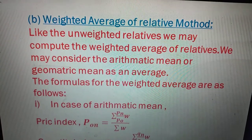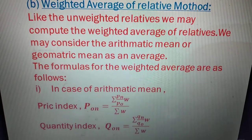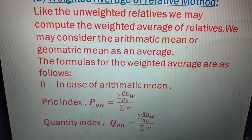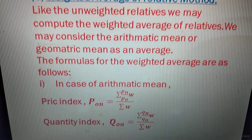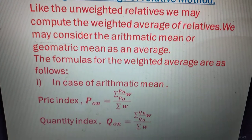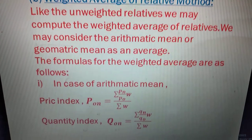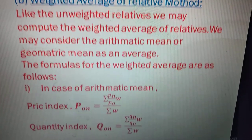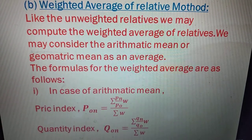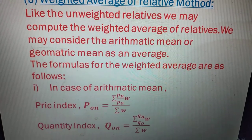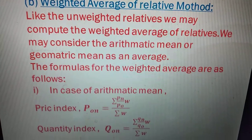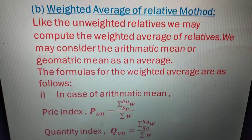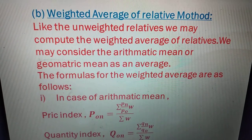The arithmetic mean quantity index Q-suffix-on equals summation of (q-suffix-n divided by q-suffix-o) multiplied by w, divided by summation of w, then multiplied by 100.